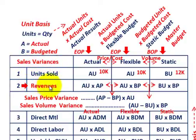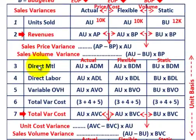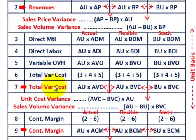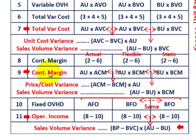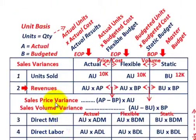For our sales variances, we're going to be looking at our revenues, and then our total variable cost — which includes direct material, direct labor, and variable overhead — on a per unit basis. After we know our total variable cost, we can determine our contribution margin, which is simply the difference between revenues and total variable costs. Then, contribution margin minus fixed overhead gives us our operating income.